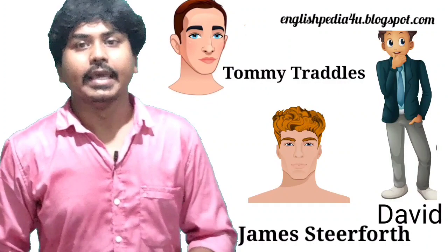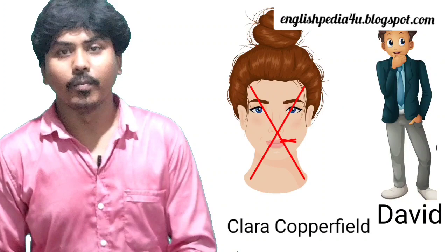In the meantime, David comes to know that his mother has died, and he returns home. After returning home, he is neglected by Mr. Murdstone's family. On the other hand, Peggotty marries a man called Mr. Barkis.